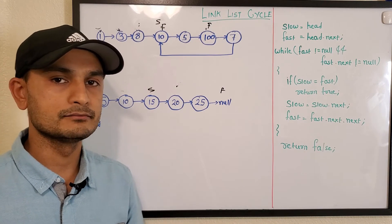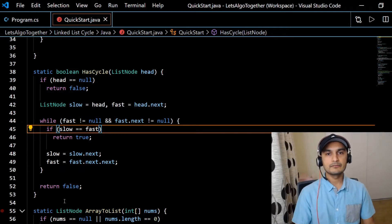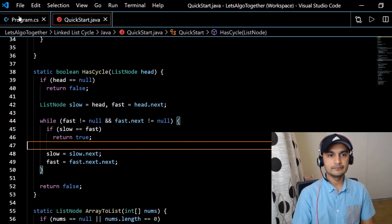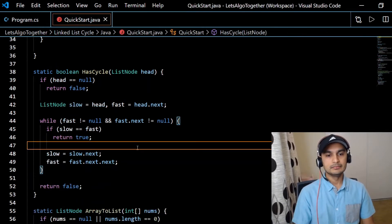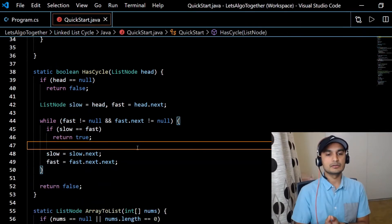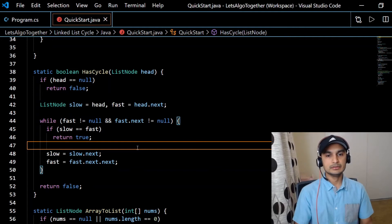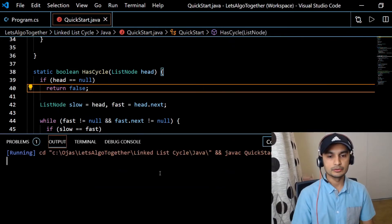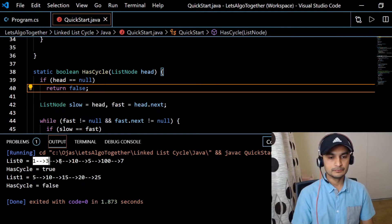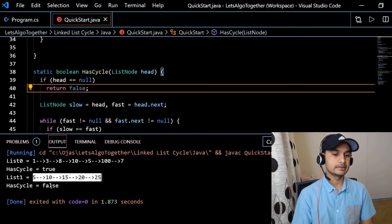Okay guys, this is our final code. This is Java code. We also have C# code, both are exactly the same and it's pretty much the same as what we discussed on the whiteboard. Let's simply run it and confirm we see the expected output. There you go, the first list has a cycle, the second list doesn't have a cycle.